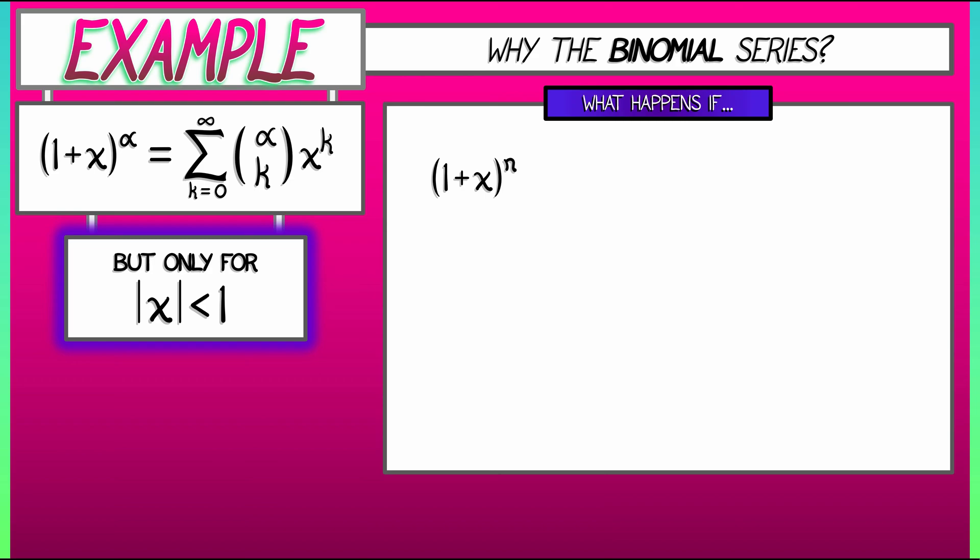What is 1 plus x to the n? Well, according to the binomial series, it's the sum k goes from 0 to infinity of n choose k times x to the k. But, I mean, look, I know from basic algebra, this is just a finite polynomial in x, right? It's not an infinite series. What's going on here?